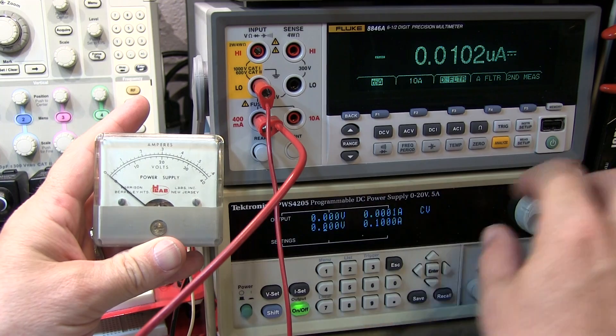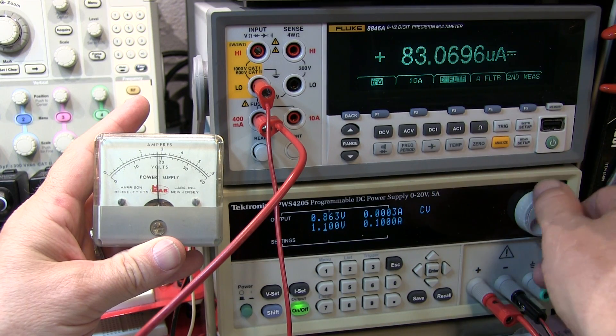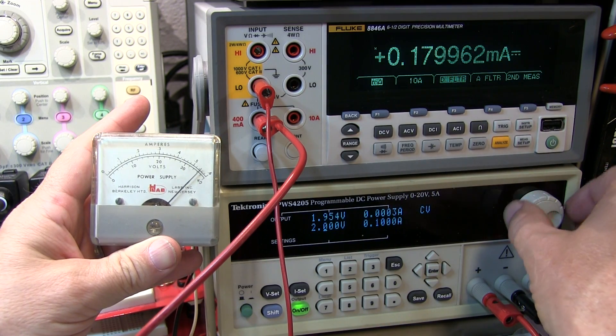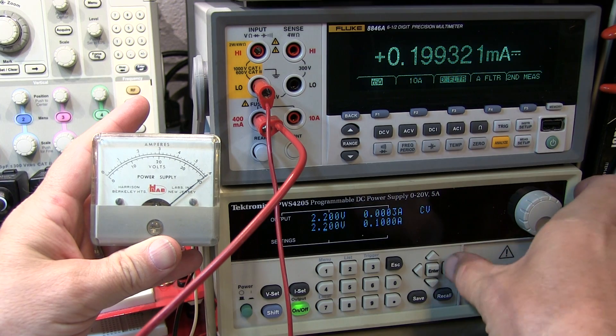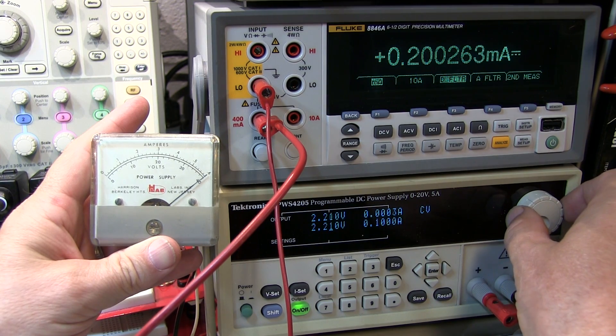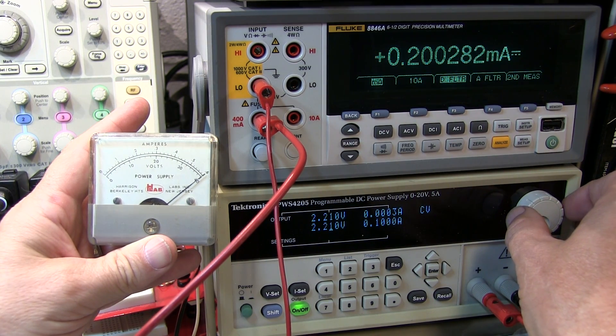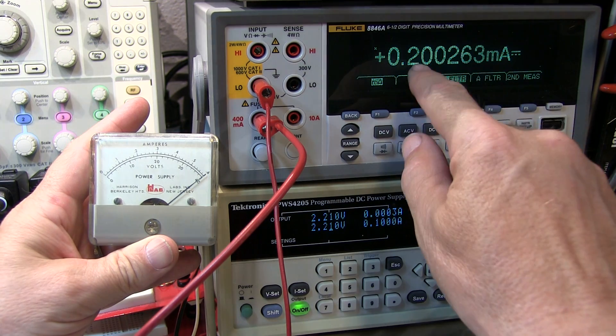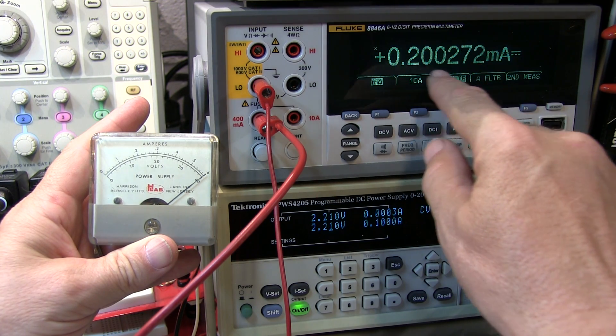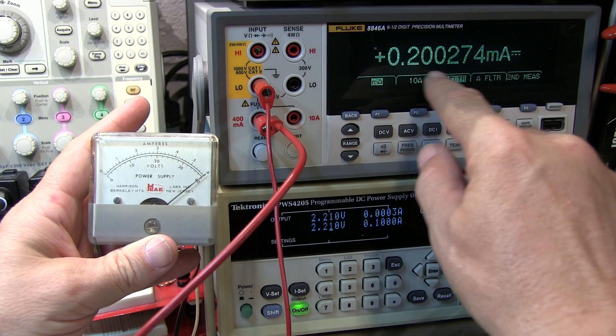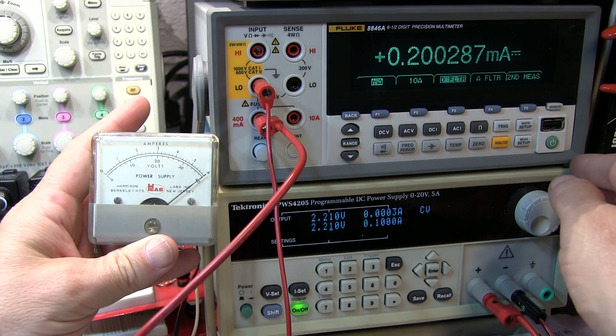Adjust the power supply until the meter reads full scale and then read the full scale current on your ammeter. Let's turn the power supply on and ramp up until we get to a full scale reading. We're reading just over 200 microamps, so let's just call it a 200 microamp full scale meter.